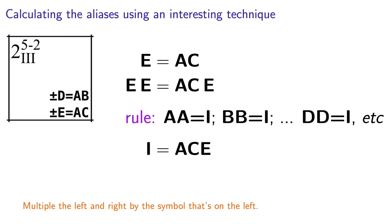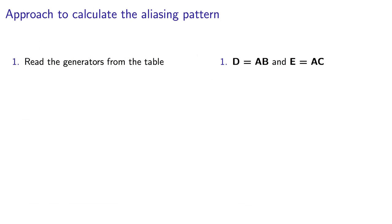You should have found a generator of EE, which equals I, which equals ACE. It is just another way of expressing that generator. So, to summarize our progress, we have two of these generators, I equals ABD, and I equals ACE. And we learned a rule for how to read them from the table.